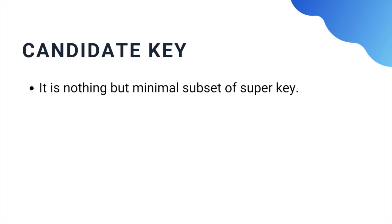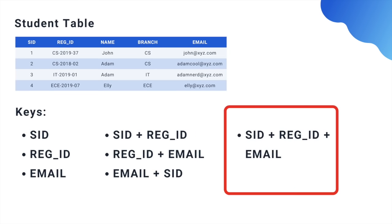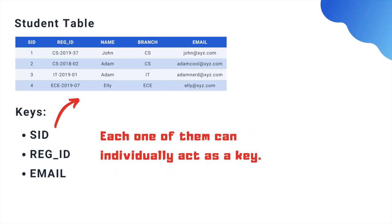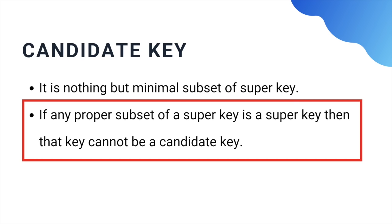Then comes candidate key — it is the minimal set of super key which can be used to uniquely identify rows of data in a table. We saw that we have so many options for super keys, but most of them are formed by unnecessary pairing of keys, like email ID, SID, and Registration ID together as a key, or email and SID as a key, when email, SID, and Registration ID can individually uniquely identify a row of data.